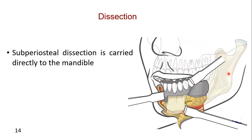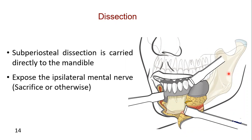Sub-periosteal dissection is carried directly to the mandible and the flaps are elevated to expose the ipsilateral mental nerve, which might have to be sacrificed depending on the location of the tumor and the extent of the mandibular resection.